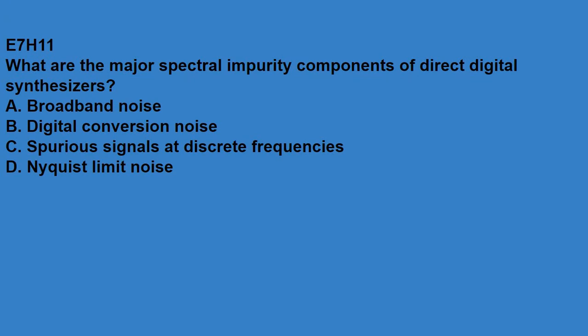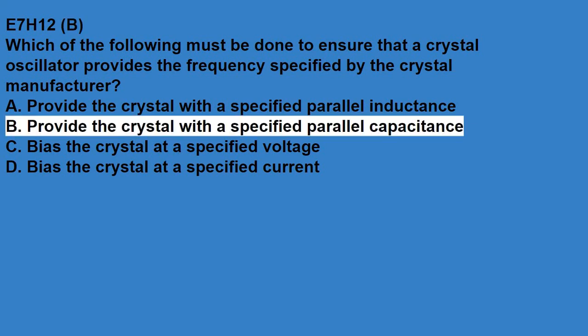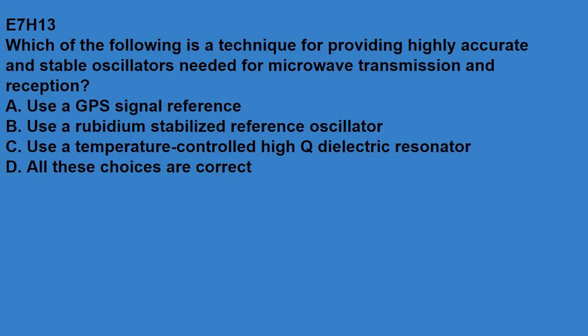E7H11, what are the major spectral impurity components of a direct digital synthesizer? Spurious signals at discrete frequencies. E7H12, which of the following must be done to ensure that crystal oscillators provide the frequency specified by the crystal manufacturer? Provide the crystal with a specified parallel capacitance. E7H13, which of the following is a technique for providing highly accurate and stable oscillators needed for microwave transmission and reception? All of these choices are correct: use a GPS signal reference, use a rubidium stabilized reference oscillator, use a temperature-controlled high-Q dielectric resonator.